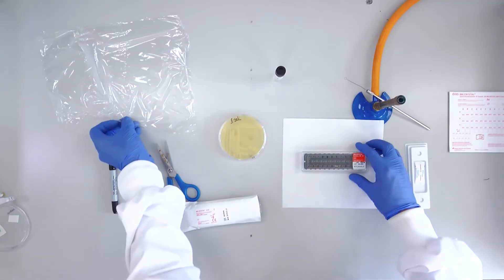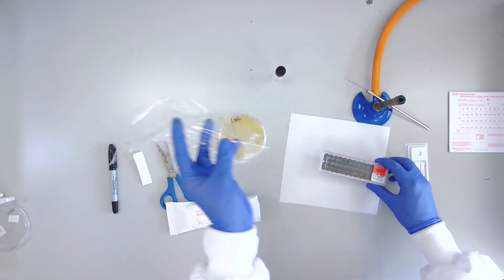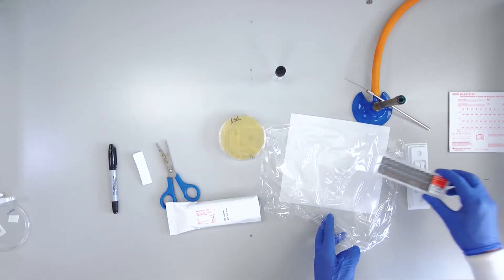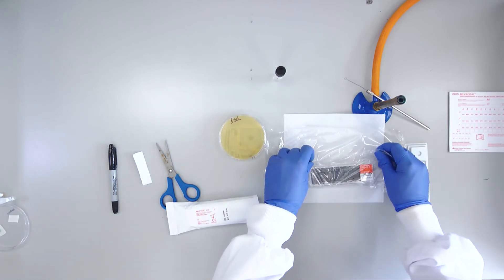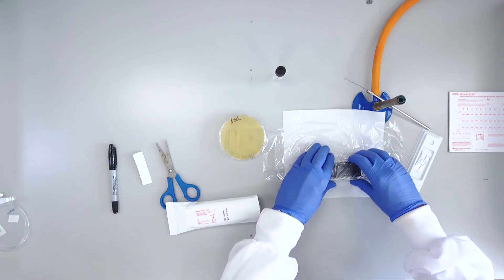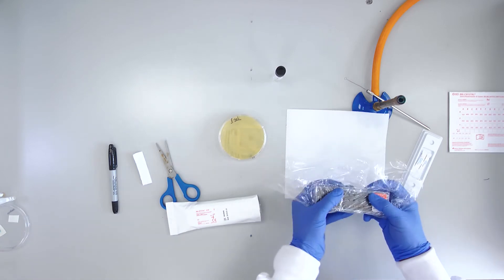The panel will then be wrapped in cling film to prevent drying out and placed in the 37 degree incubator with the label facing downwards for 18 to 24 hours.